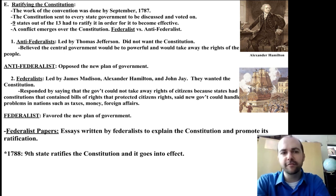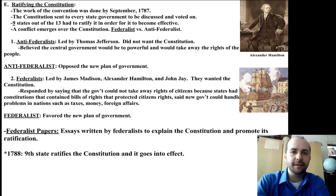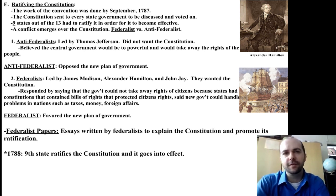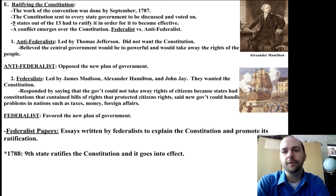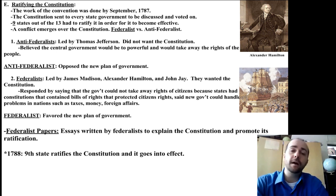The Anti-Federalists opposed the new plan of government, and the Federalists favored the new plan of government. There were different essays written — we see right here the Federalist Papers. There were also Anti-Federalist Papers. The Federalist Papers were essays written by Federalists to explain the Constitution and promote its ratification. Because even though the Constitution is kind of a short document — only about four pages long — it's very complicated, has some hidden meanings, and has parts that are not easy to understand by the common person. The Federalist Papers were designed to explain why certain parts were written the way they were and to explain certain powers that it had.